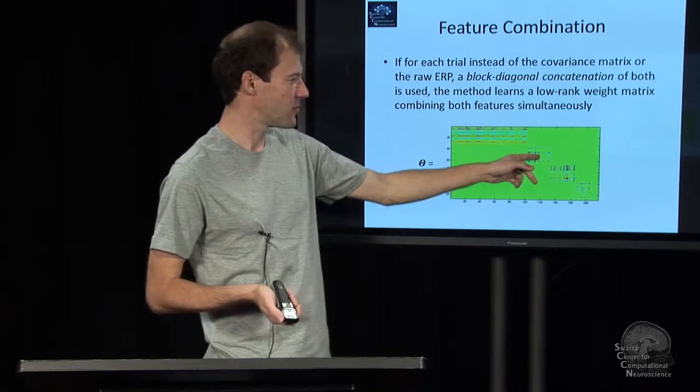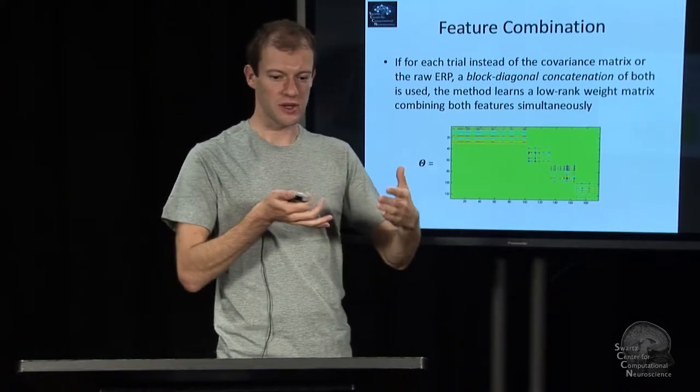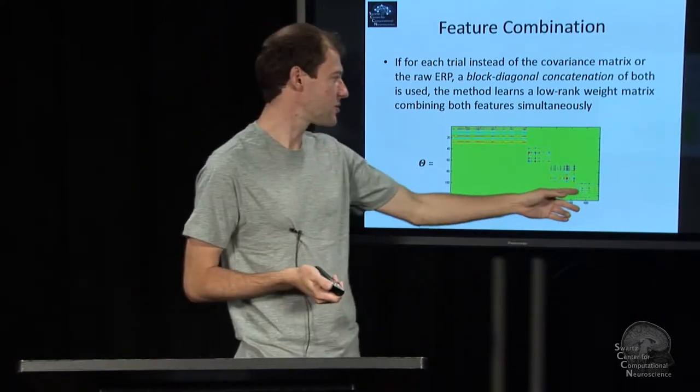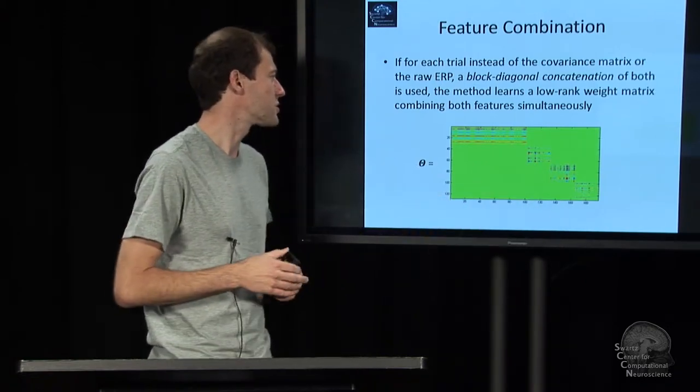For example, covariance matrix for one frequency band in the whole time range, covariance matrix of the data under another frequency band, such as 10 hertz, 10 to 15, 15 to 30 hertz, and so on.